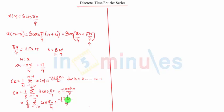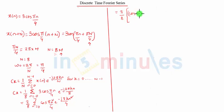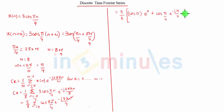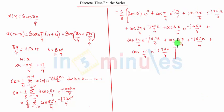Now let us expand these terms. We need to evaluate n from 0 to 7. So let us go one by one. For n=0: cos(0)·e^0. For n=1: cos(π/4)·e^(−jπk/4). And further n ranges from 2 to 7, so let us substitute those values directly.